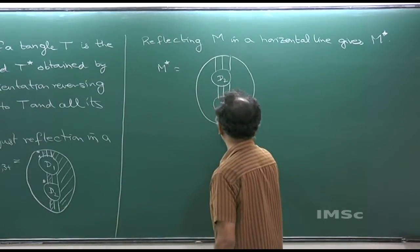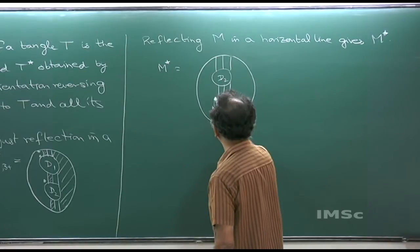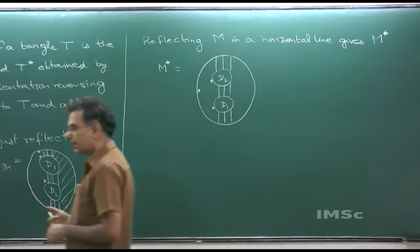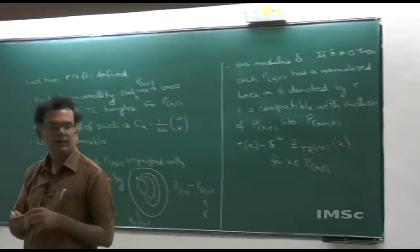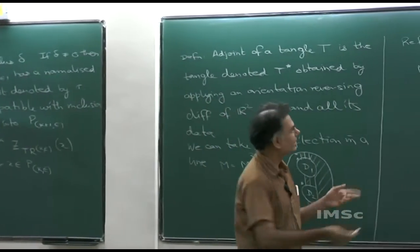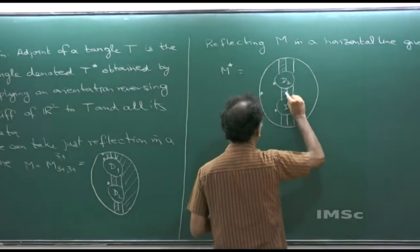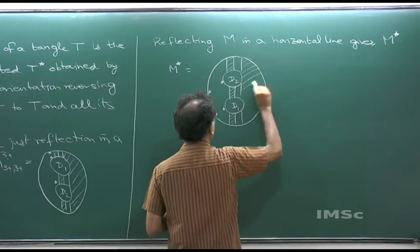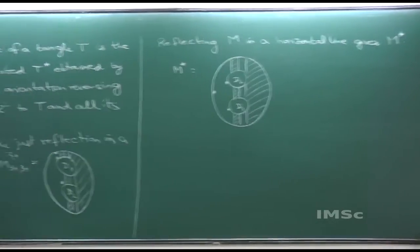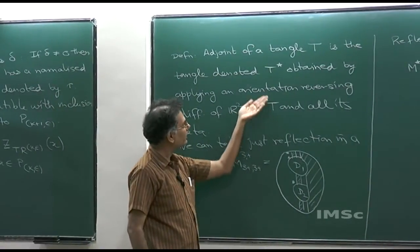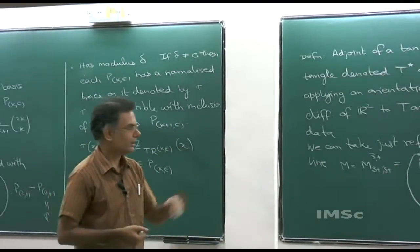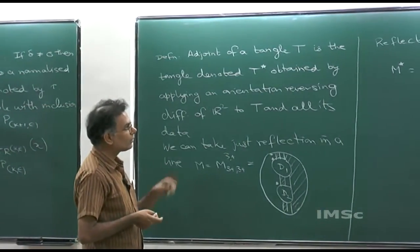When I reflect, D1 goes below and D2 is on top. We have the distinguished arcs: the distinguished arc for the external disk D0, for D1, and for D2. Everything gets reflected — shading, arcs, numbering, all data. That is why I said: applying this orientation-reversing diffeomorphism to T and all its data. So this is M-star. If you look at this tangle, it looks very much like the multiplication tangle except the numbering of 1 and 2 has been reversed.